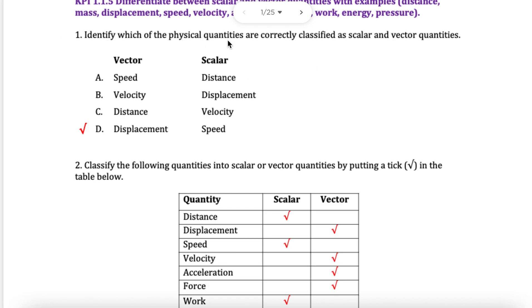Question number one is asking to identify which quantities are scalar and vector. First thing to remember is scalar has size only, magnitude only. Vector has size and direction.